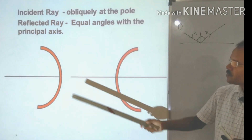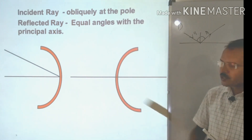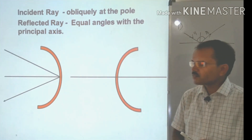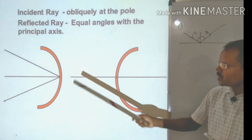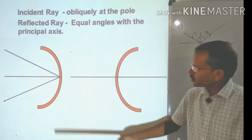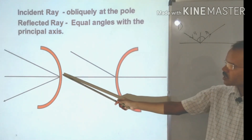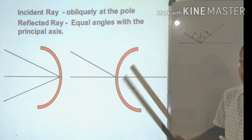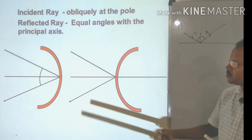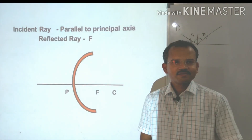Fourth characteristic: if the incident ray falls on the pole P, then it gets reflected back making an equal angle with the principal axis on the other side. Both angles are equal. This applies for concave as well as convex mirrors.